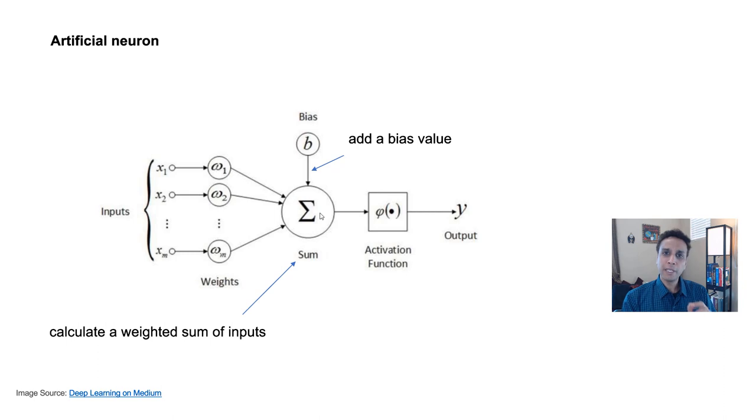Now a decision needs to be made by this neuron. Shall I activate this or not? That's where the activation function comes into the picture. So the activation function is used to decide whether to fire the neuron or not, or whether to make this active or not. In other words, is my output equals to one or zero? One if it is activated, zero if it's not activated.